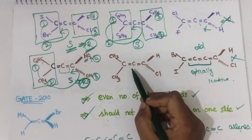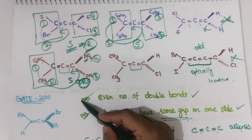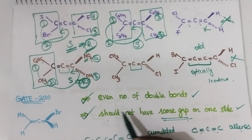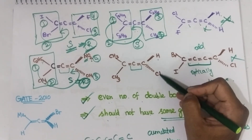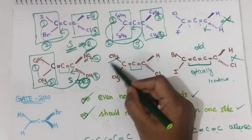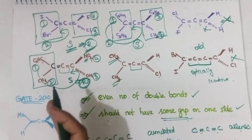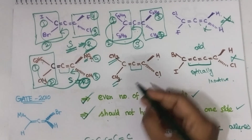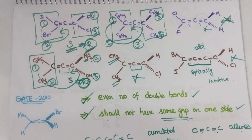Now for another example with even number of double bonds — first rule is okay. But here you have two methyl groups on the same side. Then that particular substance will be optically inactive. So you should not have odd number of double bonds, and you should not have same groups on one side. These are the two rules to keep in mind in order to find out the optical activity and R/S configuration.